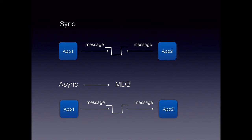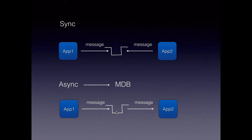There are two different models in which a message can be consumed. One is the synchronous model, wherein app 1 sends a message to the queue or topic and app 2 is reading it right away, or it keeps polling the queue for a message. The other is the asynchronous model — the more popular way — which completely decouples the two applications. App 2 need not keep polling the queue; the message-oriented middleware will notify app 2 and deliver the message when it arrives, in an asynchronous manner.